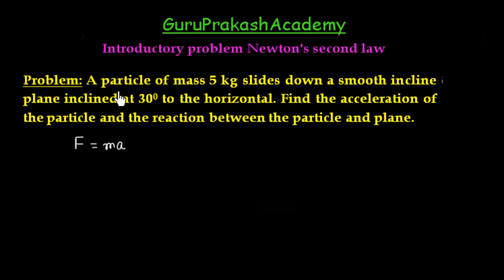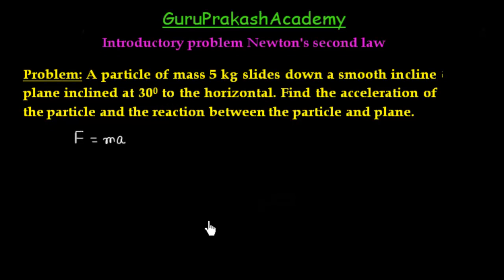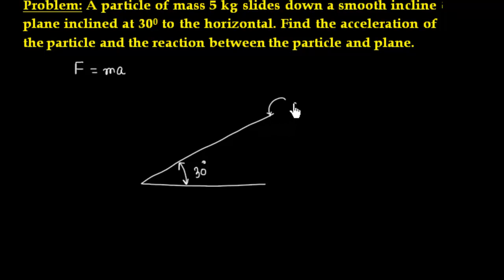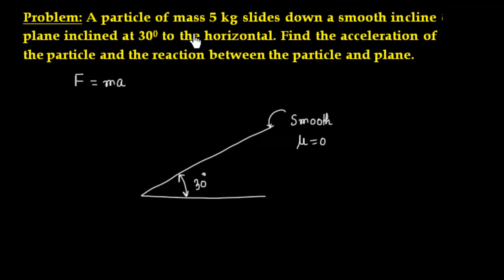Question: a particle of mass 5 kg slides down a smooth inclined plane inclined at 30 degrees to the horizontal. We have an inclined plane inclined at an angle of 30 degrees from the horizontal. This inclined plane is smooth, so there is no friction — mu is equal to zero. There is a particle of mass m = 5 kg placed on the incline.